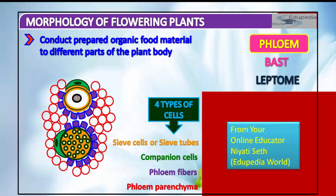Phloem parenchyma is made up of elongated, tapering, cylindrical cells — sometimes also oval or spherical — which have dense cytoplasm and a nucleus. The cell wall is composed of thin cellulose and has pits through which plasmodesmata connections exist between the cells. Phloem parenchyma stores food material and other substances like resins, latex, and mucilage. It is absent in most monocotyledons.